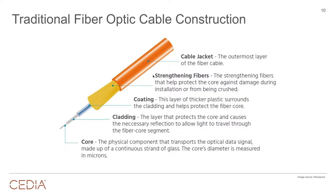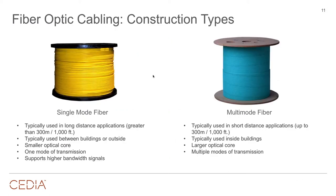Inside the cable are strengthening fibers, also known as aramid yarn — essentially Kevlar. Most fiber is made with Kevlar, giving it a 200 to 220 pound pull rating — two to four times stronger than copper cables. The cladding protects the core and the cable jacket finishes it off. It's a different construction than copper but makes fiber incredibly strong and durable, much easier to work with than cables in a traditional AV installation.